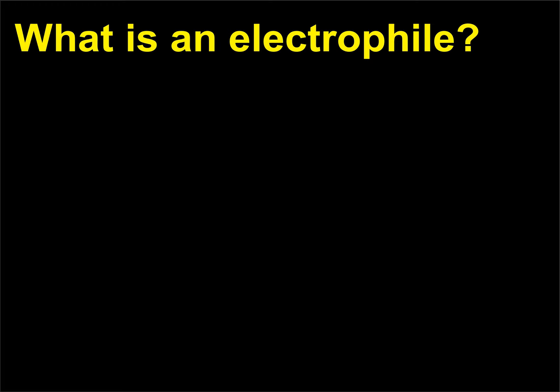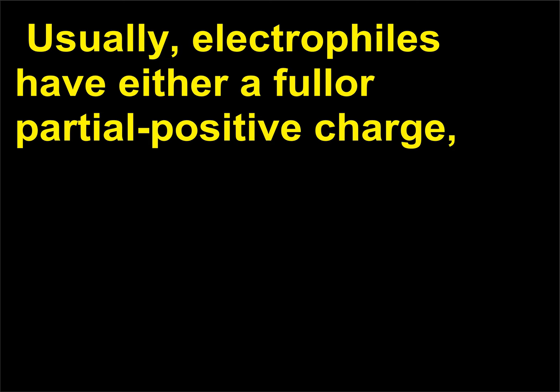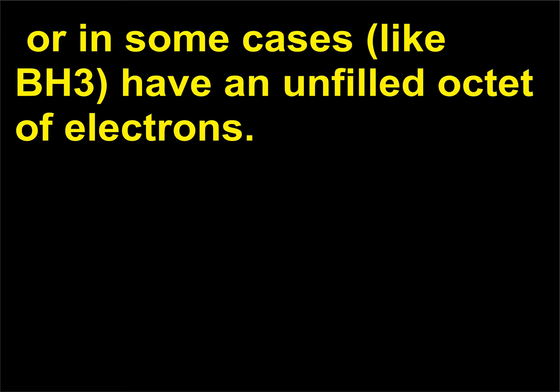What is an electrophile? Electrophiles are species that accept electrons from a nucleophile in a chemical reaction. Usually, electrophiles have either a full or partial positive charge, or in some cases, like BH₃, have an unfilled octet of electrons.